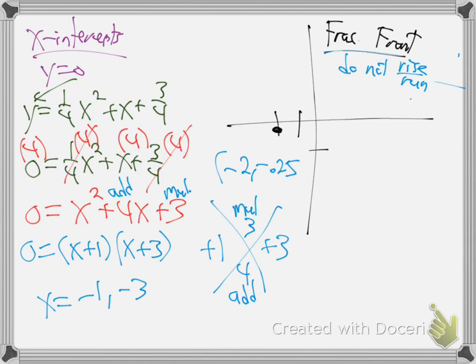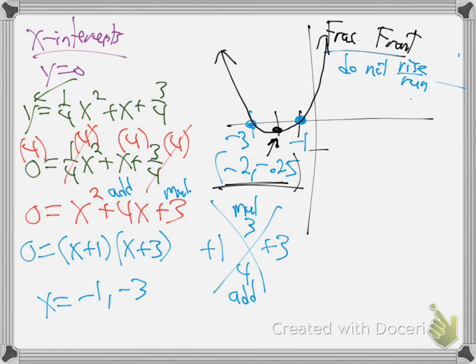Now we've got to get y. Y equals x squared plus 4x plus 8. Plug in negative 2. Put in negative 2, put in negative 2. That'll be 4 minus 8 plus 8. Y is 4. So the center is minus 2, comma 4. Let's go to the graph: back 2, up 1, 2, 3, 4 - right there, that's the center.